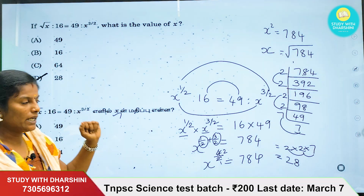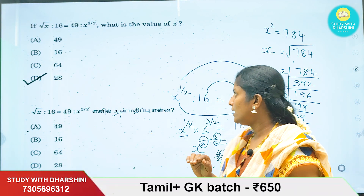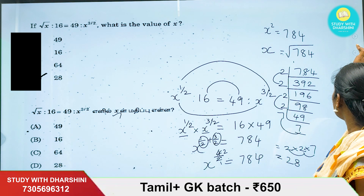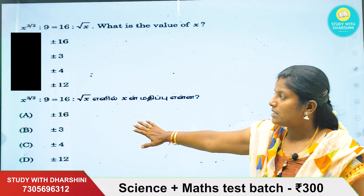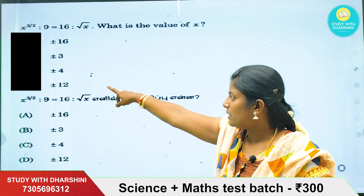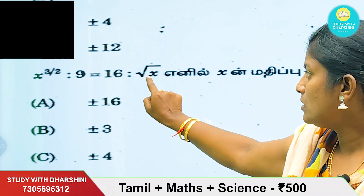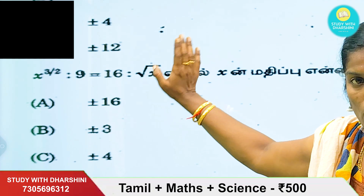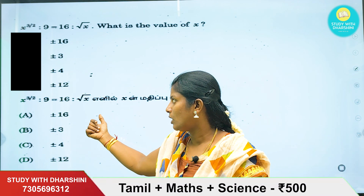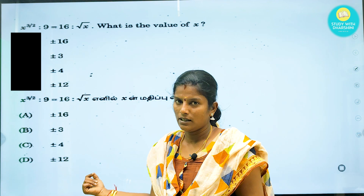Next, you have one homework sum. Try this type: x power 3 by 2 is to 9, equal 16 is to root x. This sum follows the same pattern — solve it and you can see the answer in the comments.